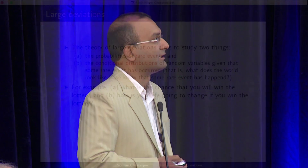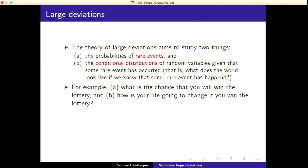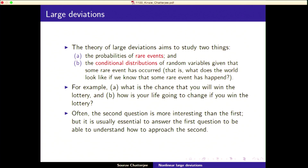A silly example: what is the chance that you'll win the lottery? And the second thing is, how is life going to change if you win the lottery? That's the conditional distribution part. Often the second question is more interesting than the first, because the first is just a small number. The second is more complicated — you don't know how things are going to be affected if something very unlikely happens. But it's usually essential to answer the first question before you can understand the second.